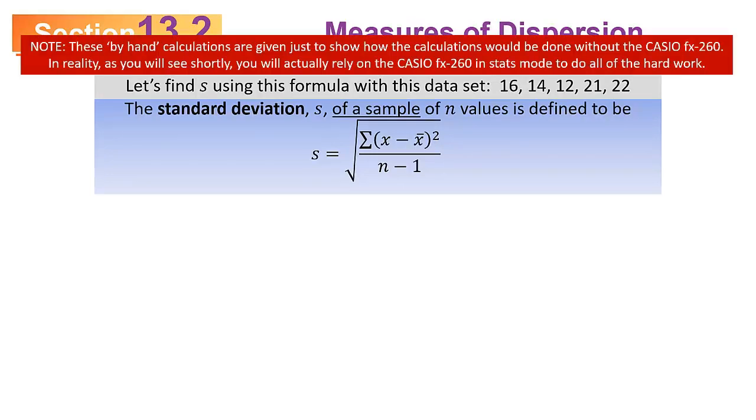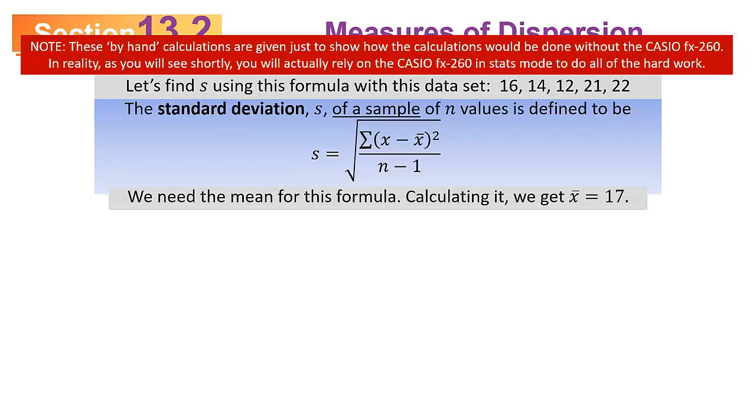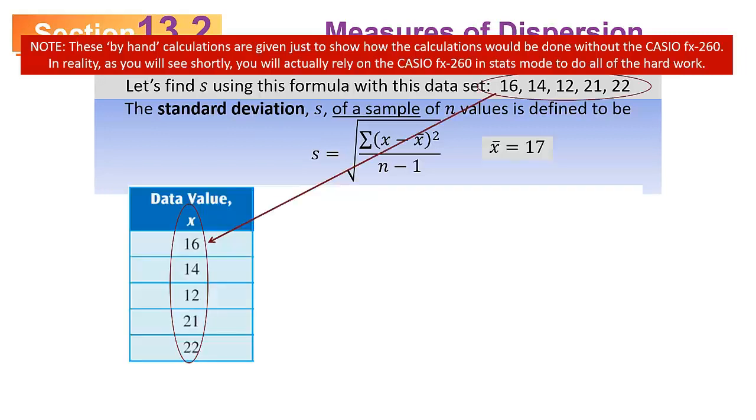Let's take a data set: 16, 14, 12, 21, 22, and calculate the standard deviation without assuming there's a button on the calculator. If you're having difficulty calculating the mean, refer back to the previous section video. The mean turns out to be 17 for that data set. But to calculate the standard deviation from this sample of five numbers, here's what you would do by hand.